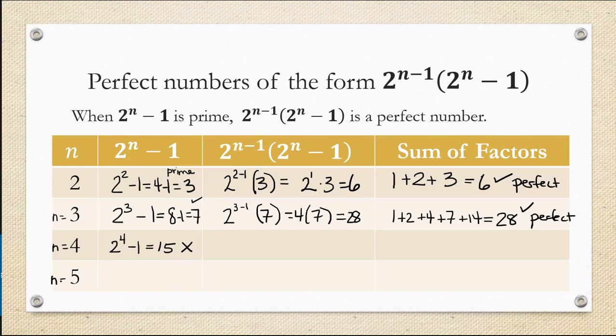Let's try n equals 5 though. If n is 5, we have 2 to the 5th minus 1, which is 32 minus 1, or 31. And that is a prime number. So let's see what perfect number it generates.